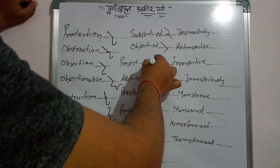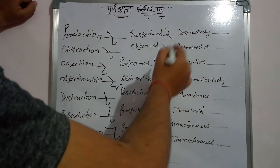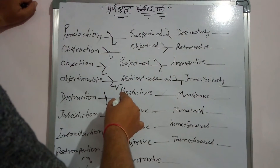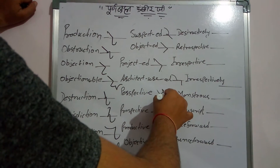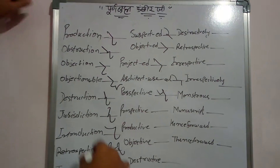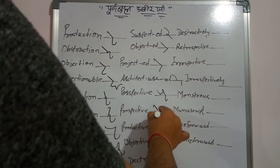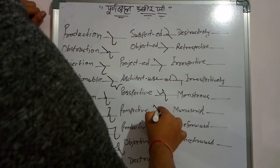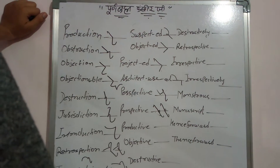और प्रोजेक्ट के लिए भी एक ही। Project. Architect, architecture, architectural — key architect. Perspective, perspective. Prospective, prospective.